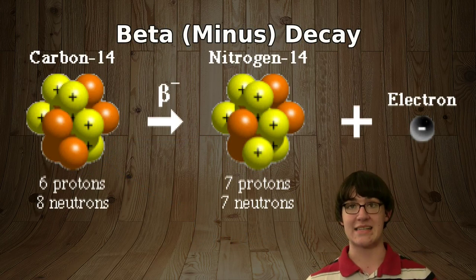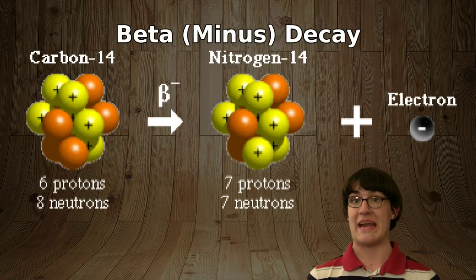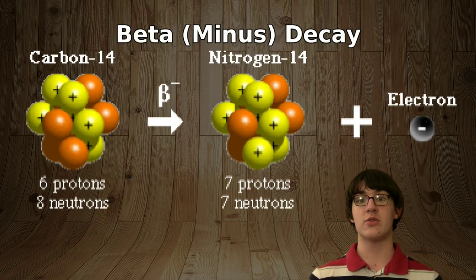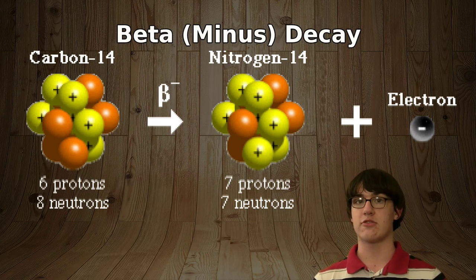Beta minus decay, often just called beta decay, is when a nucleus shoots off a beta particle, or in common terms, an electron.